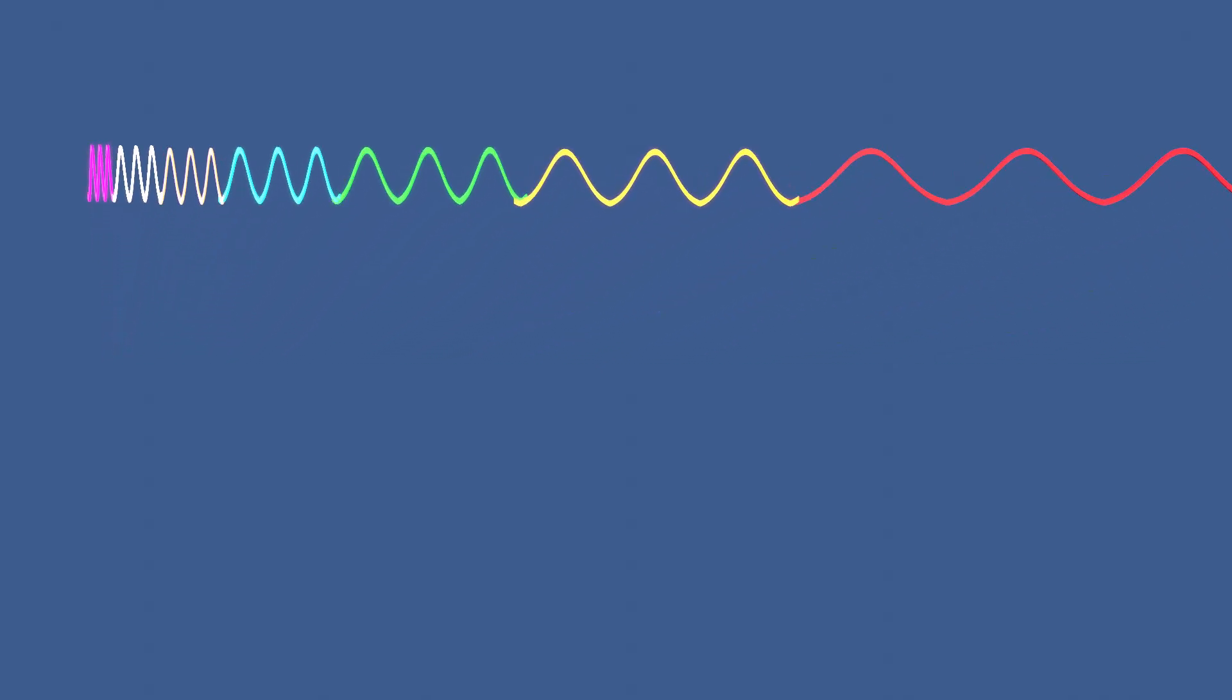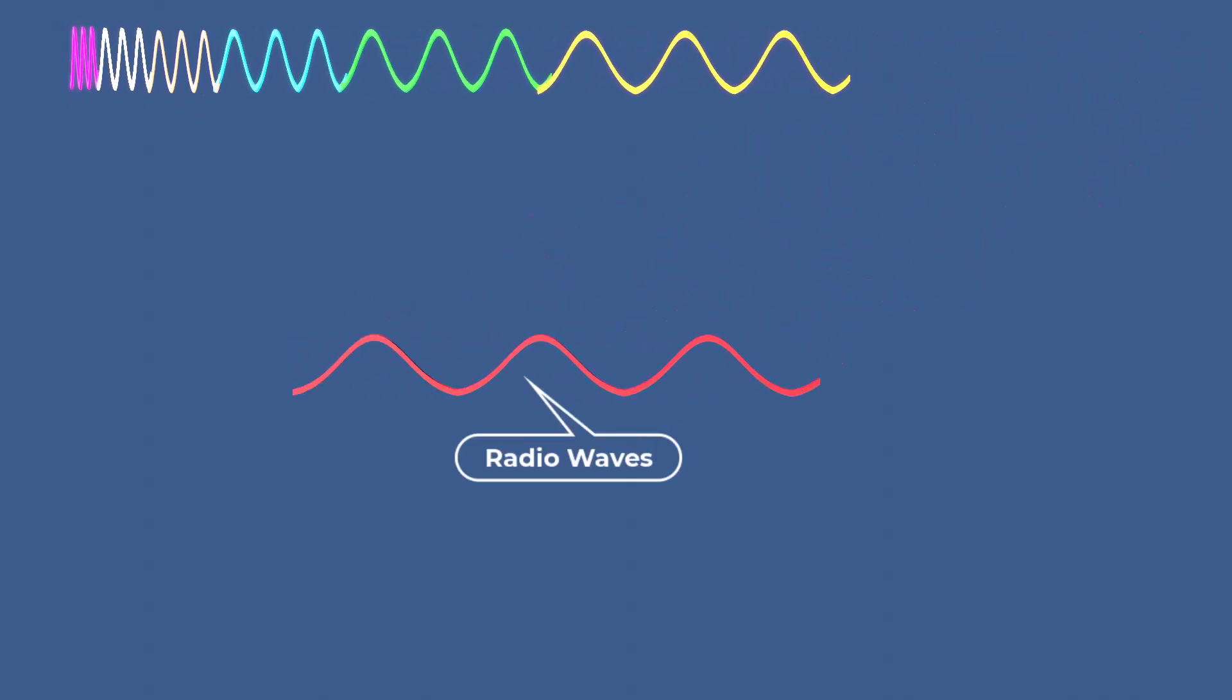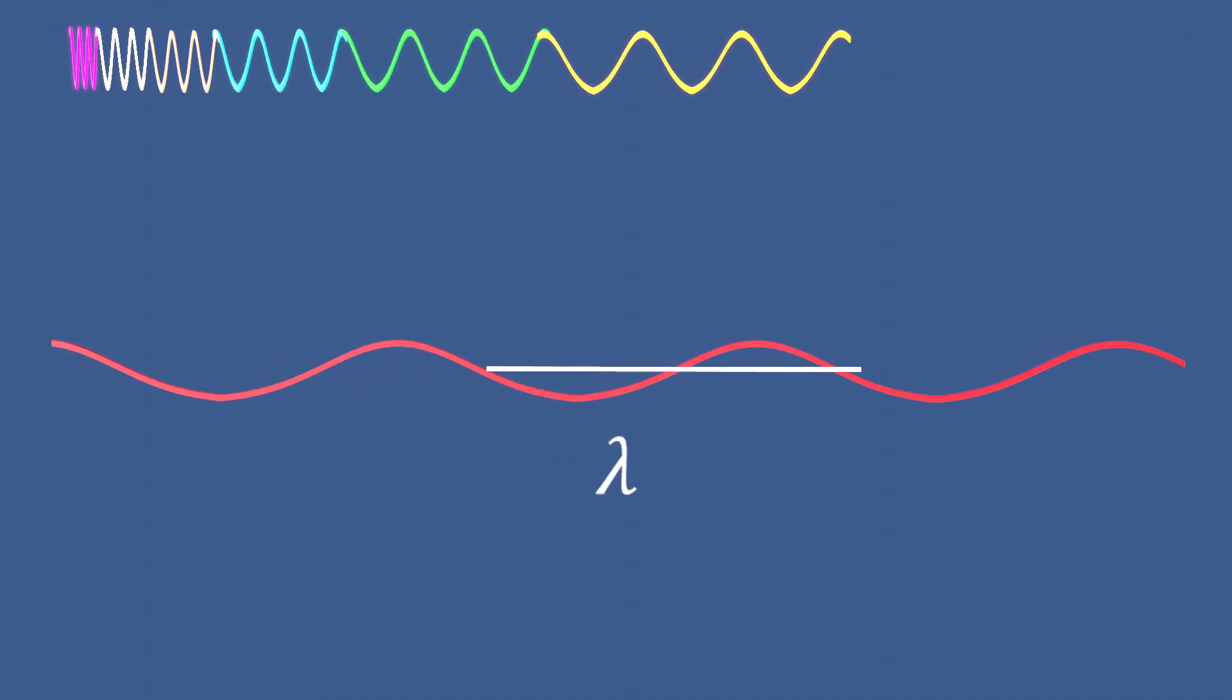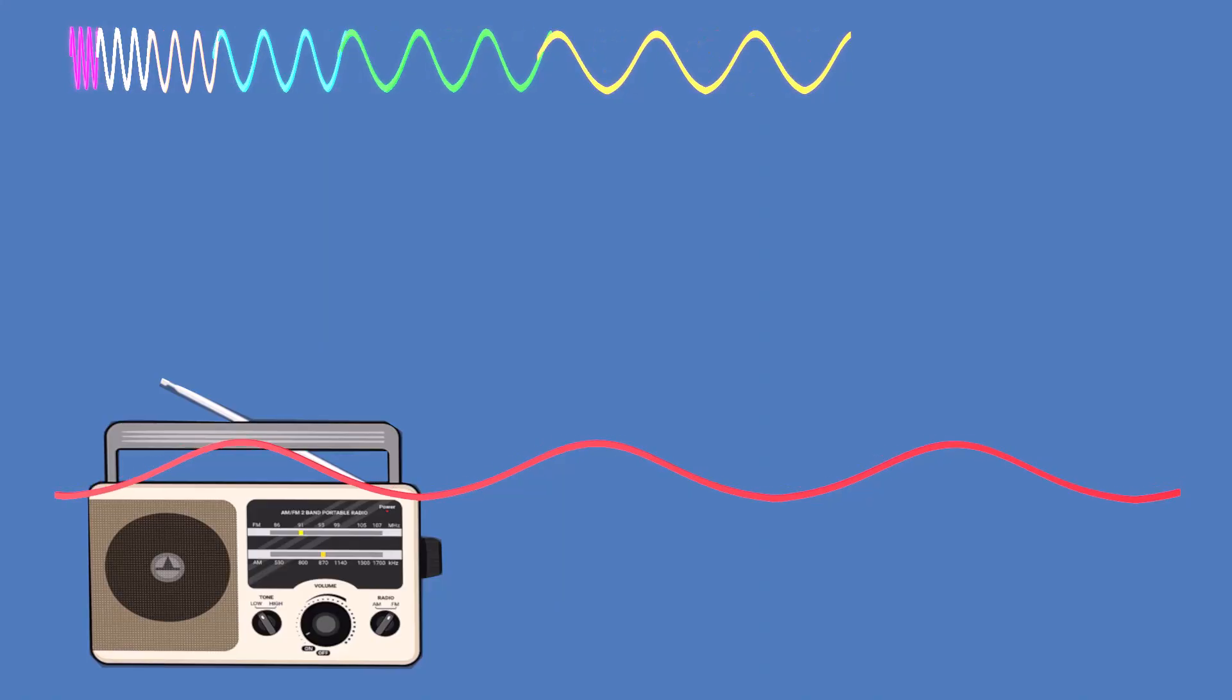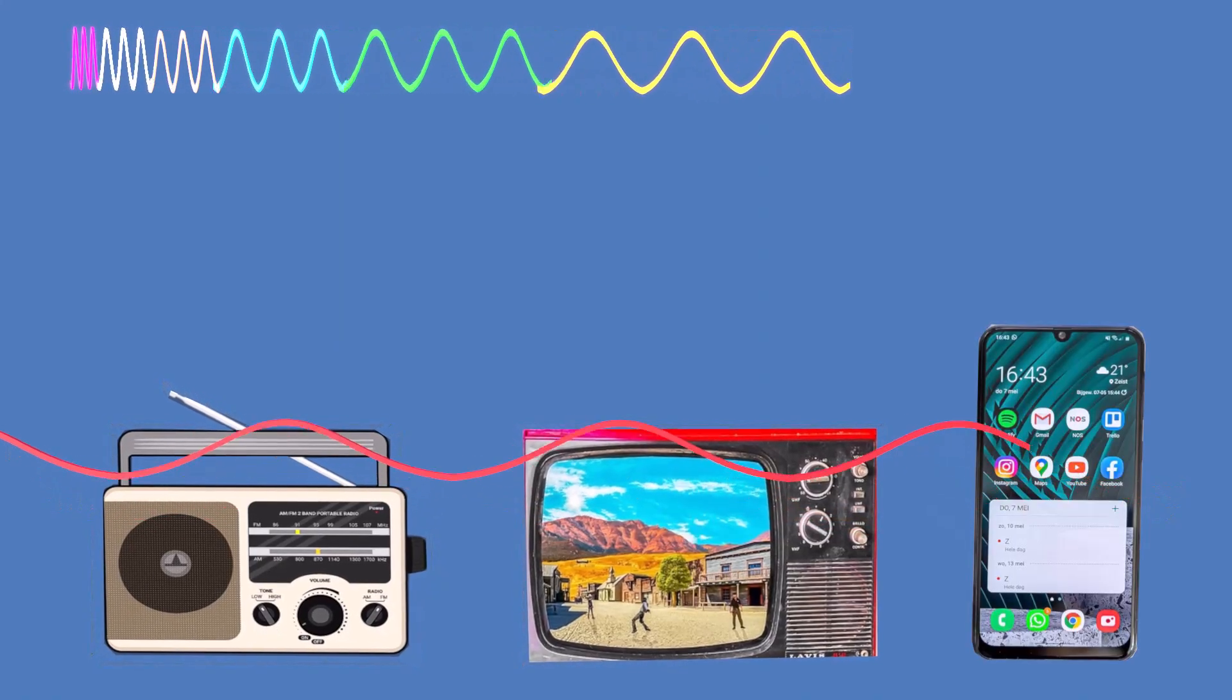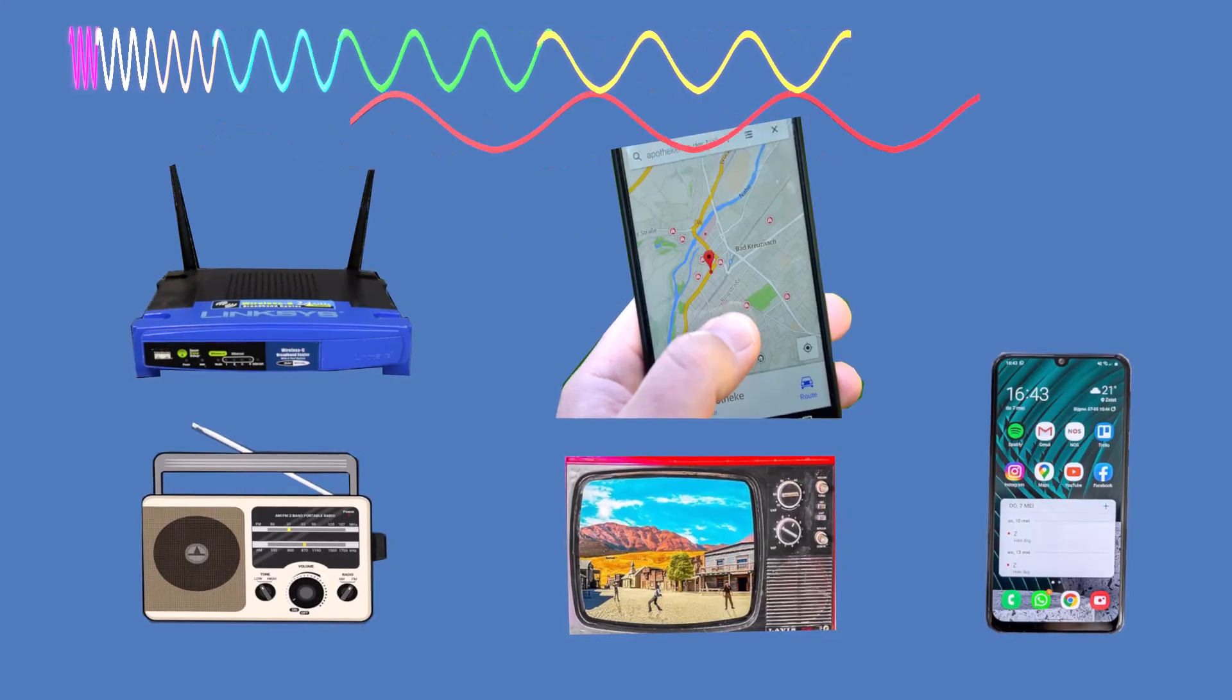Each part has unique properties and uses. At one end of the spectrum are radio waves, which have the longest wavelengths, some as long as a football field. They are used in radio broadcasting, television signals, mobile communication, Wi-Fi, and navigation.